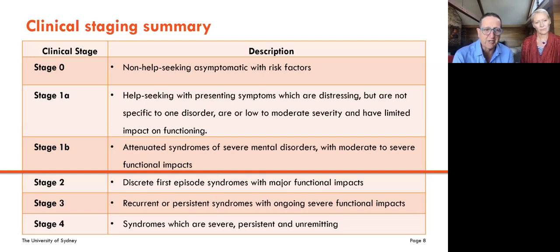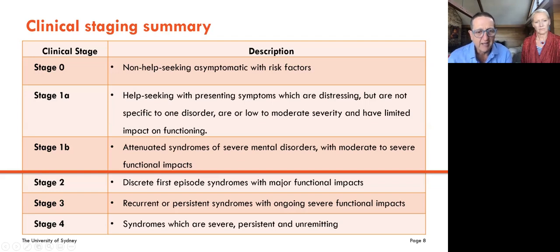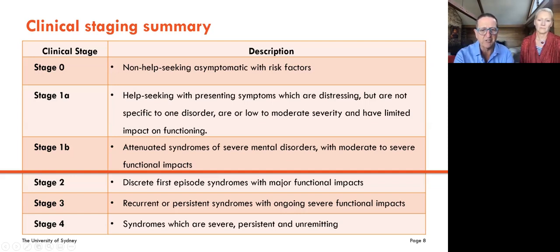In clinical care, the earliest possible presentations — the stage ones, which we divide into 1A and 1B — are help-seeking but have not yet developed a full-blown or full-threshold major mood or psychotic syndrome. The red line across the middle of this chart differentiates those at risk of progression from those who have actually developed major syndromes and, as a consequence, have major functional impairment and are likely to recur, persist, or progress to more severe disorders. Stage two, three, and four is mostly what adult psychiatry deals with — well-developed syndromes, people over the age of 20 or 25, in various phases of chronic illness, entirely deserving of best care, but where the opportunity for earlier interventional prevention has largely passed.